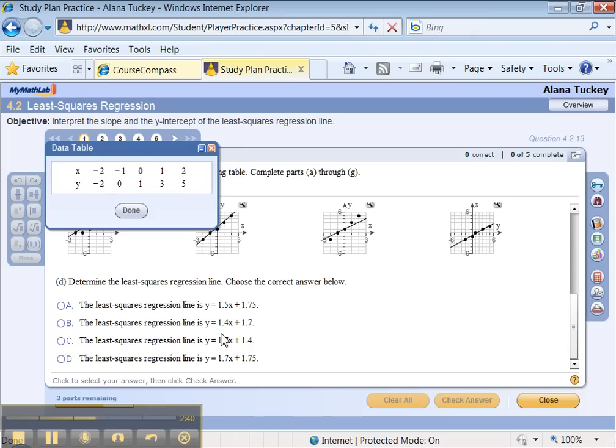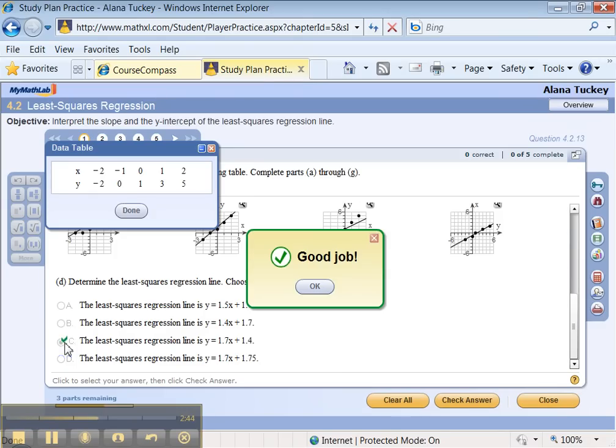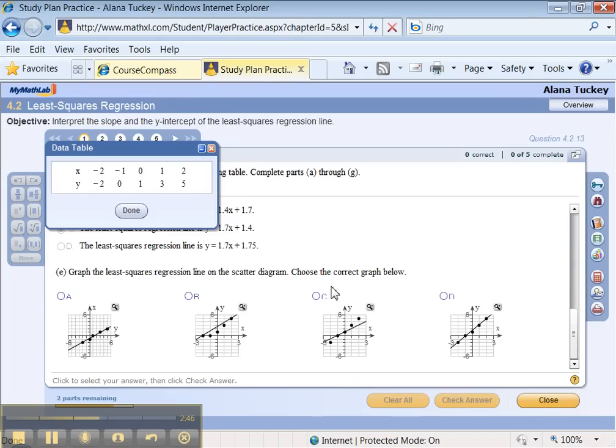Let's go back. 1.7X plus 1.4. There it is. Letter C. Enter. Great, we did it. All right, now which one's the graph of this?